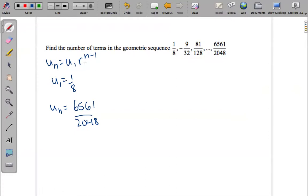For this formula, I need to either find r or n. My ratio is going to be, I'm going to take u_2. I know that u_2/u_1 = r. So if I do that calculation, I get -9/32 ÷ 1/8.